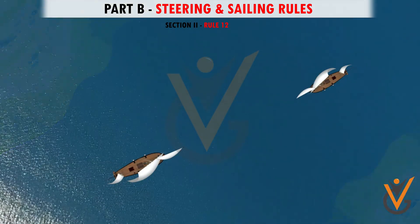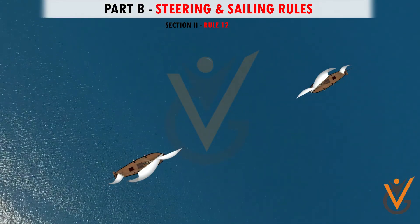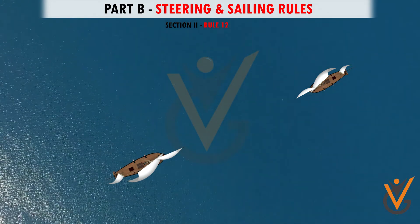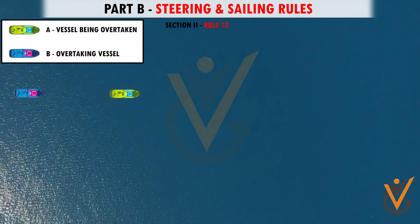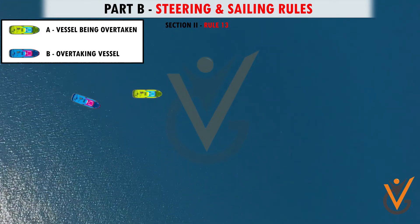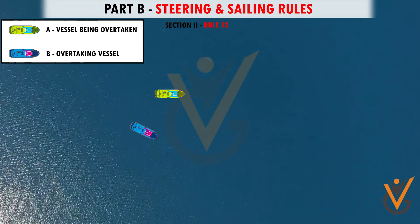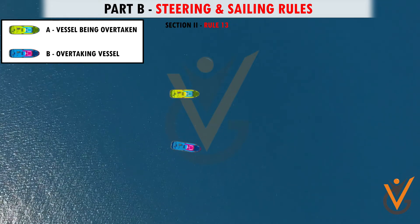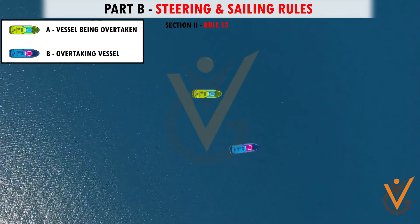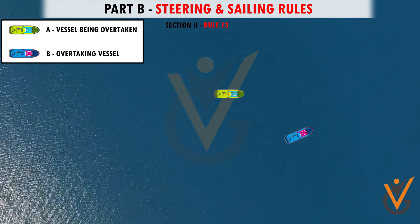Rule 12 states the action to be taken when two sailing vessels are approaching one another. Rule 13: when a vessel is overtaking another vessel, it is her duty to keep out of the way of the vessel being overtaken. An overtaking vessel cannot be considered as a crossing vessel.